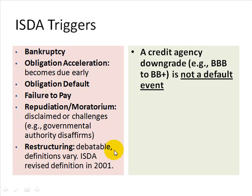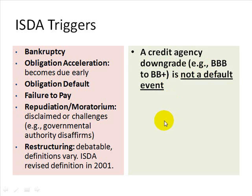Restructuring is controversial because it's very hard to objectively define what constitutes a restructuring. One point about these ISDA standardized triggers: a normal credit agency downgrade, say from BBB to BBB+, typically does not constitute a default event. Certainly a downgrade below some threshold may constitute a credit event or trigger, but typically a single notch downgrade would not constitute a credit event under a standardized ISDA contract.